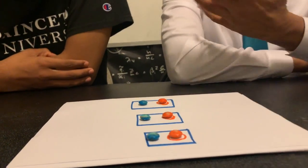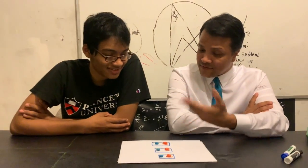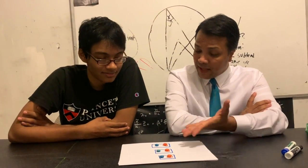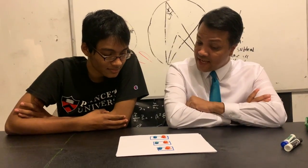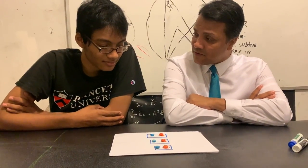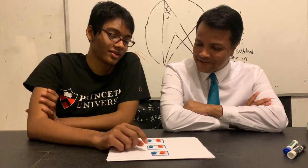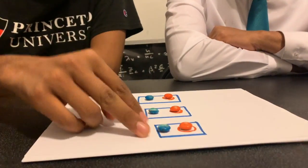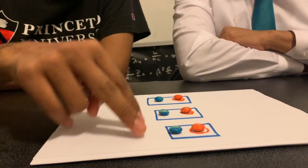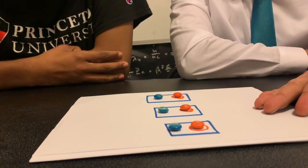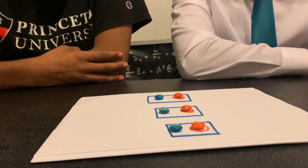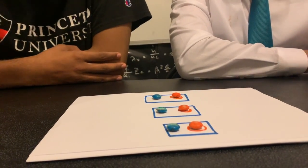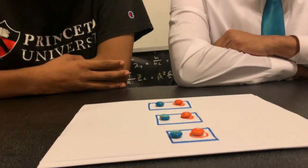Very good! This is called distribution. Can you now give me the definition — the handsome version — of the distributive property? One to each group. Right, it was already grouped before with the blue, and you give one orange to each blue group.